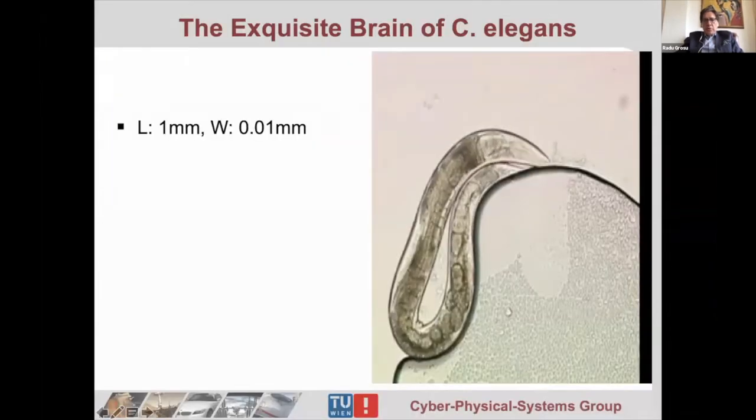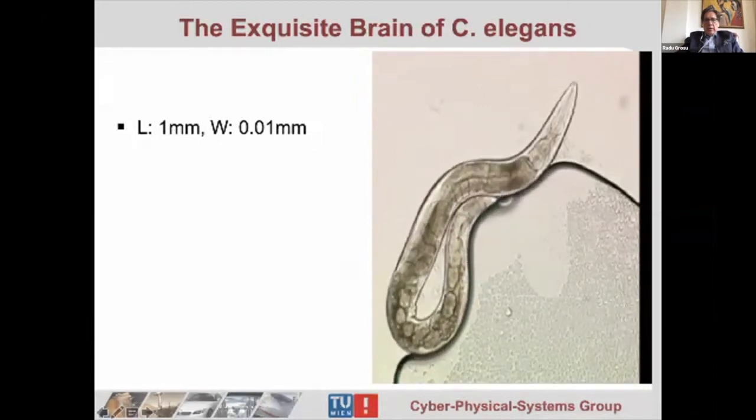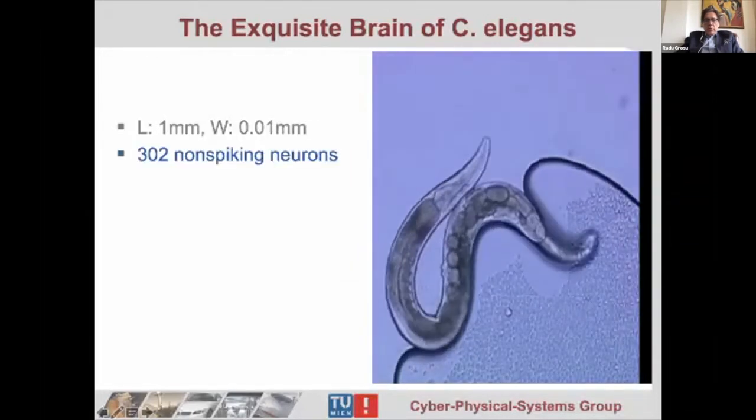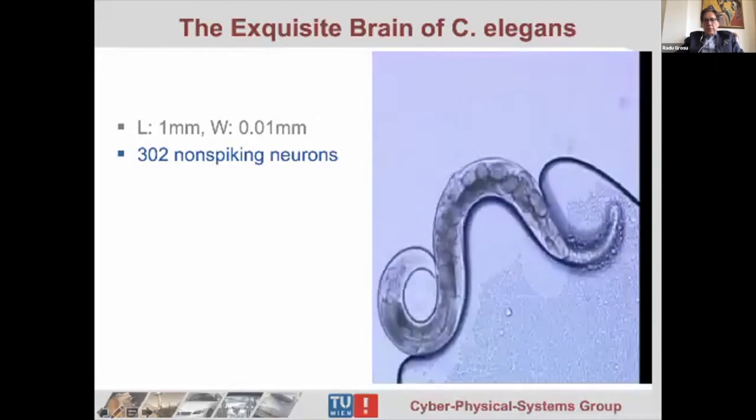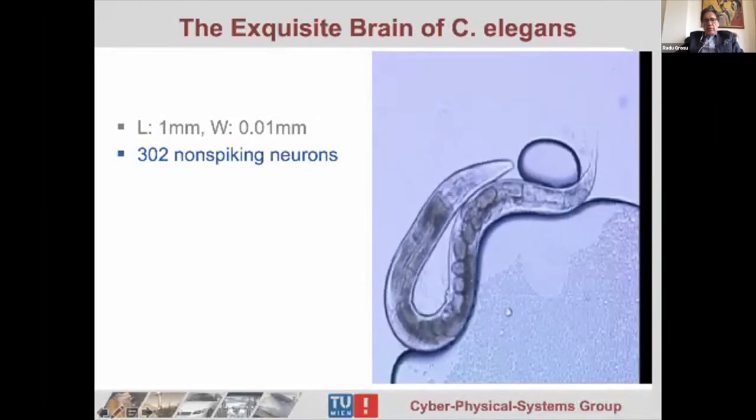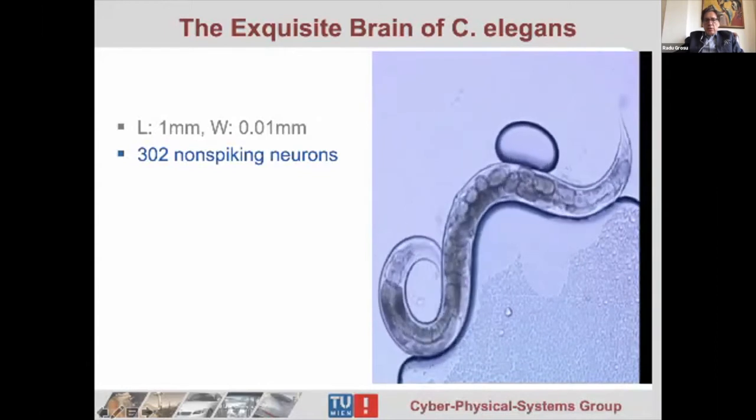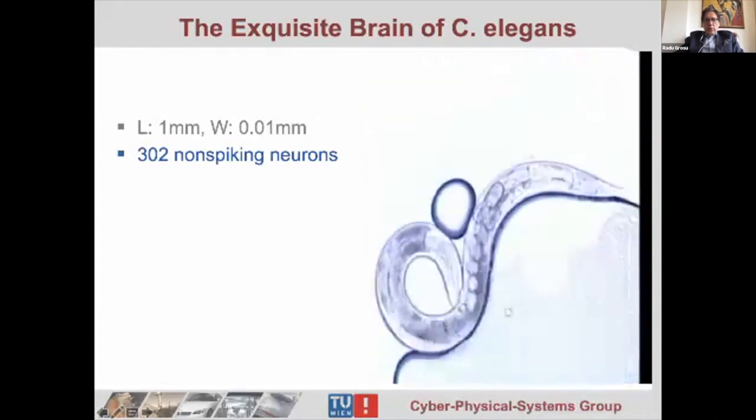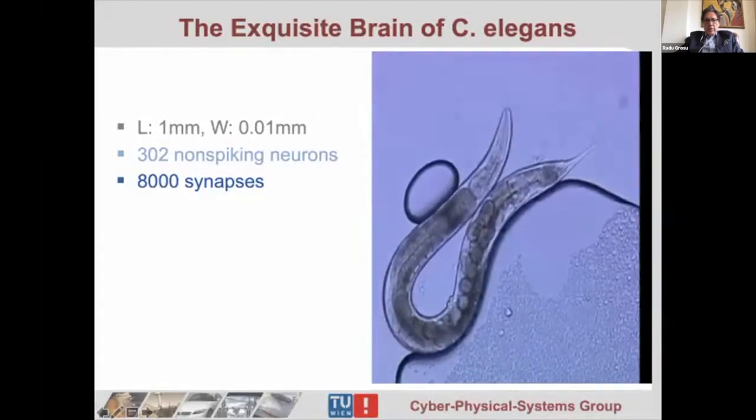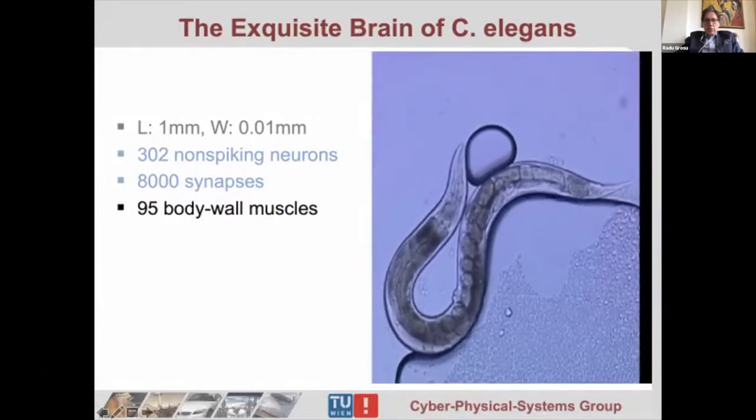Our inspiration comes from C. elegans, which is a very small worm, less than one millimeter in length and 0.01 millimeter in width. Being so small, its 302 neurons can communicate with each other without attenuation, without using spiking. We consider that spiking is a very important implementation issue, like analog-digital conversion, but not from the point of view of learning. The nematode has around 8000 synapses and 95 actuators, which are the body wall muscles.